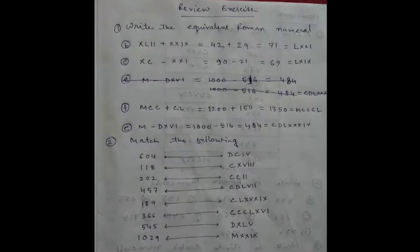Next, Review Exercise page number 22. Write equivalent Roman numerals. Number a: L minus IX. This is very easy. L minus IX means 50 minus 9, which is 41, so XLI.